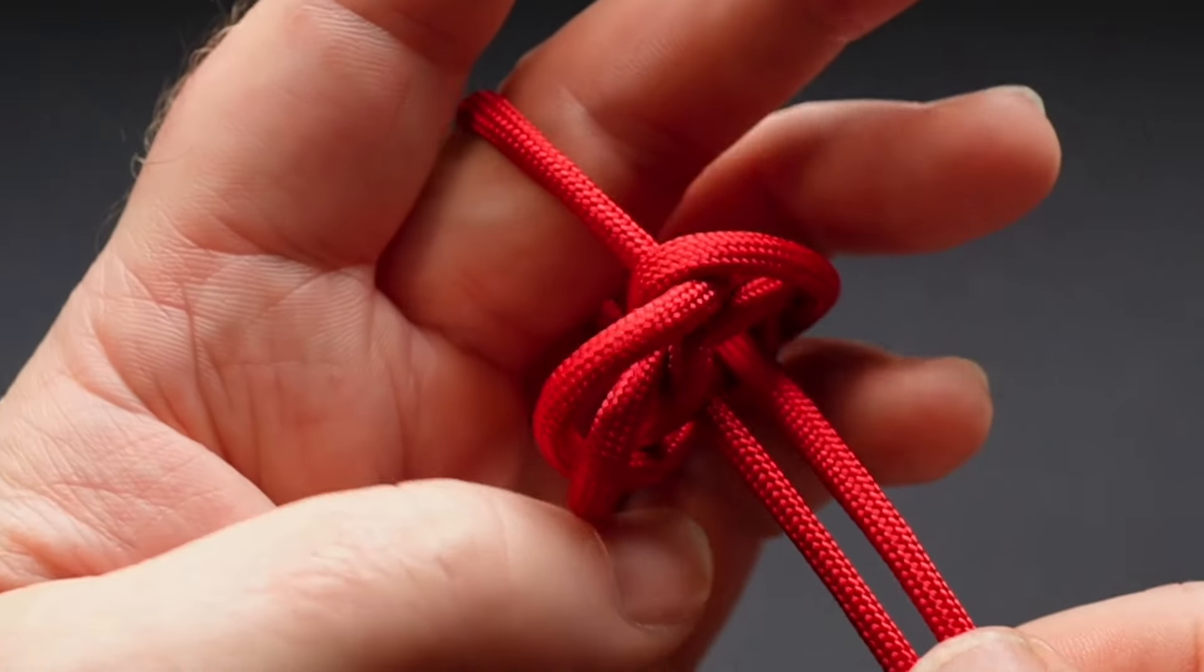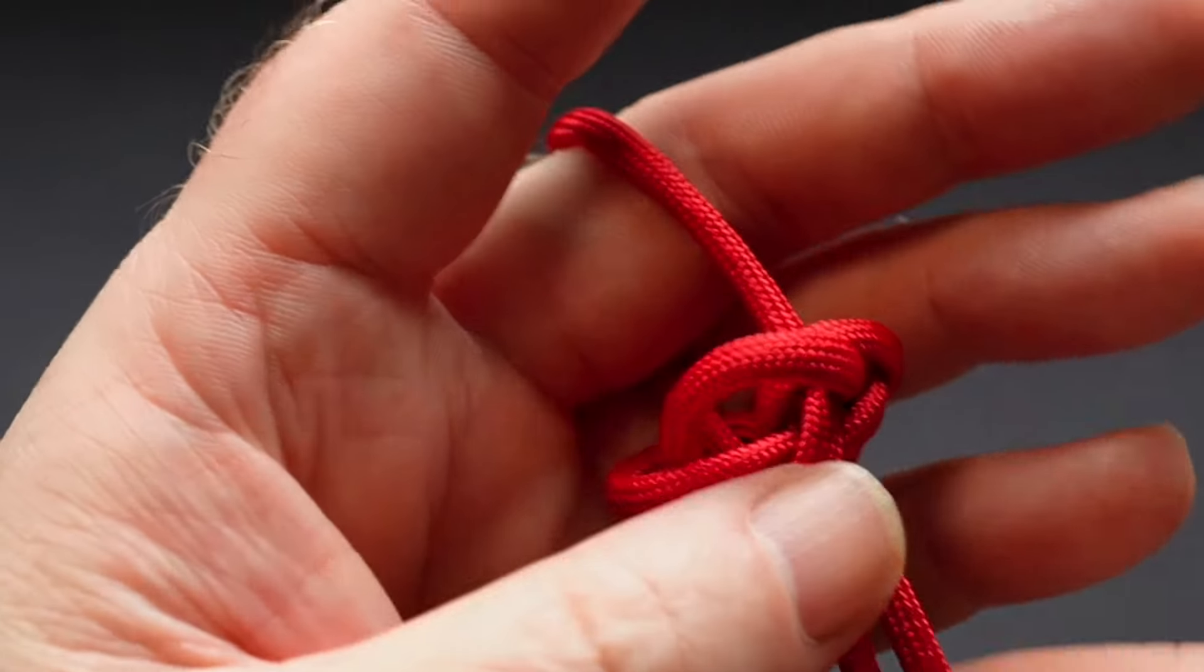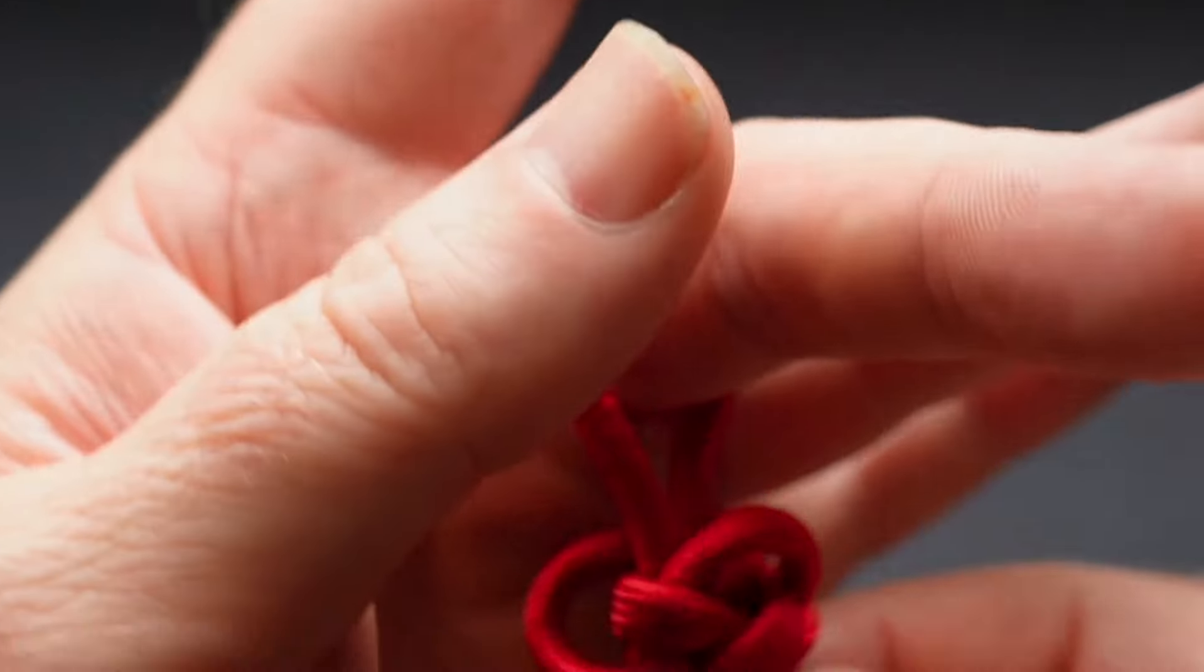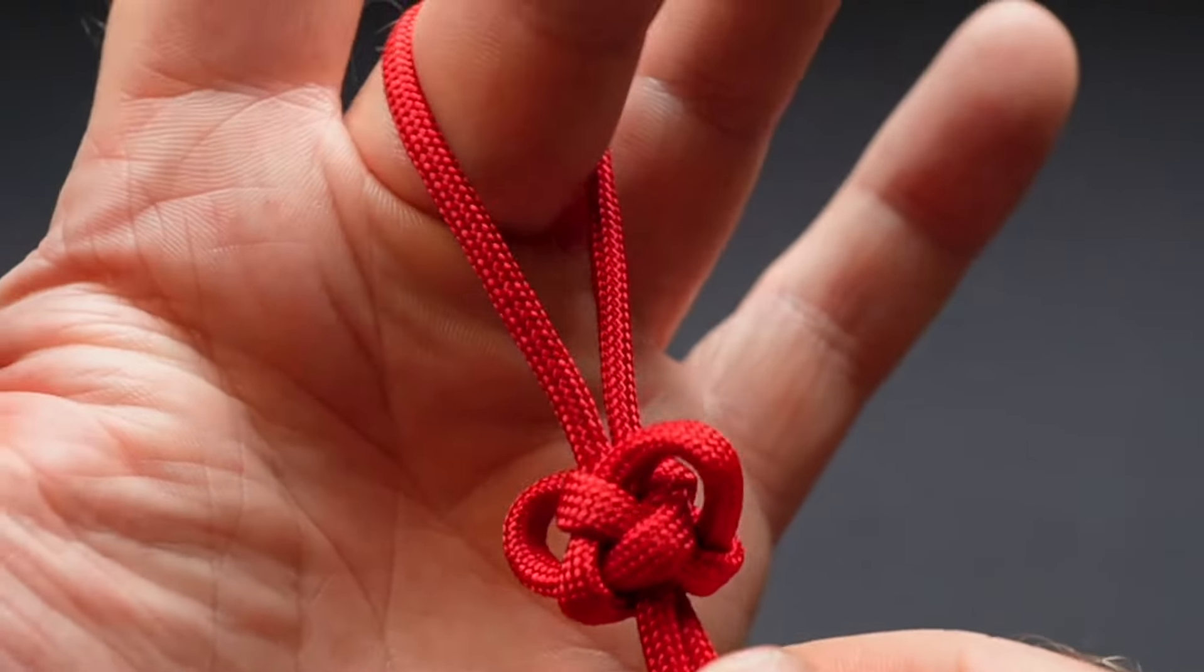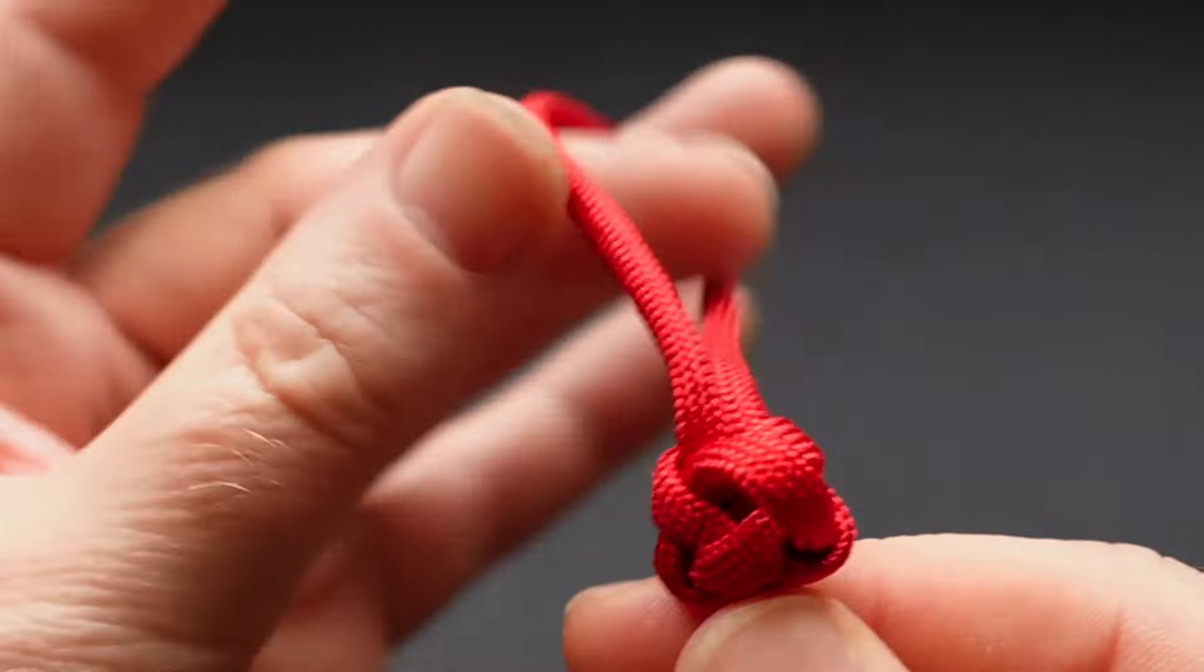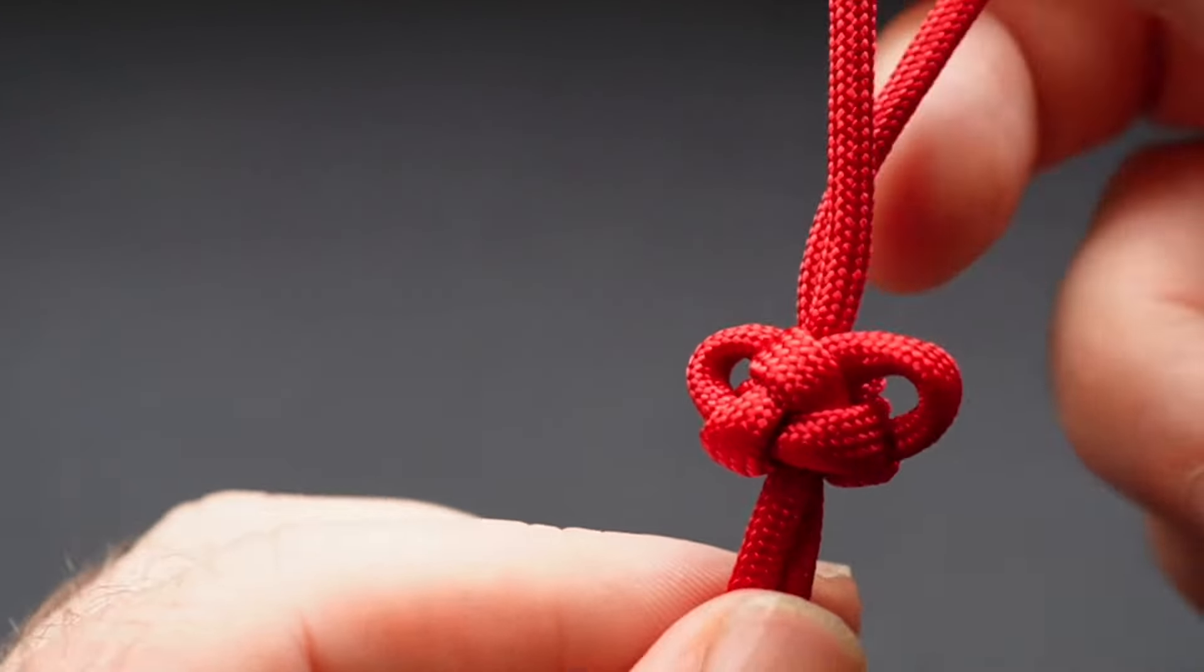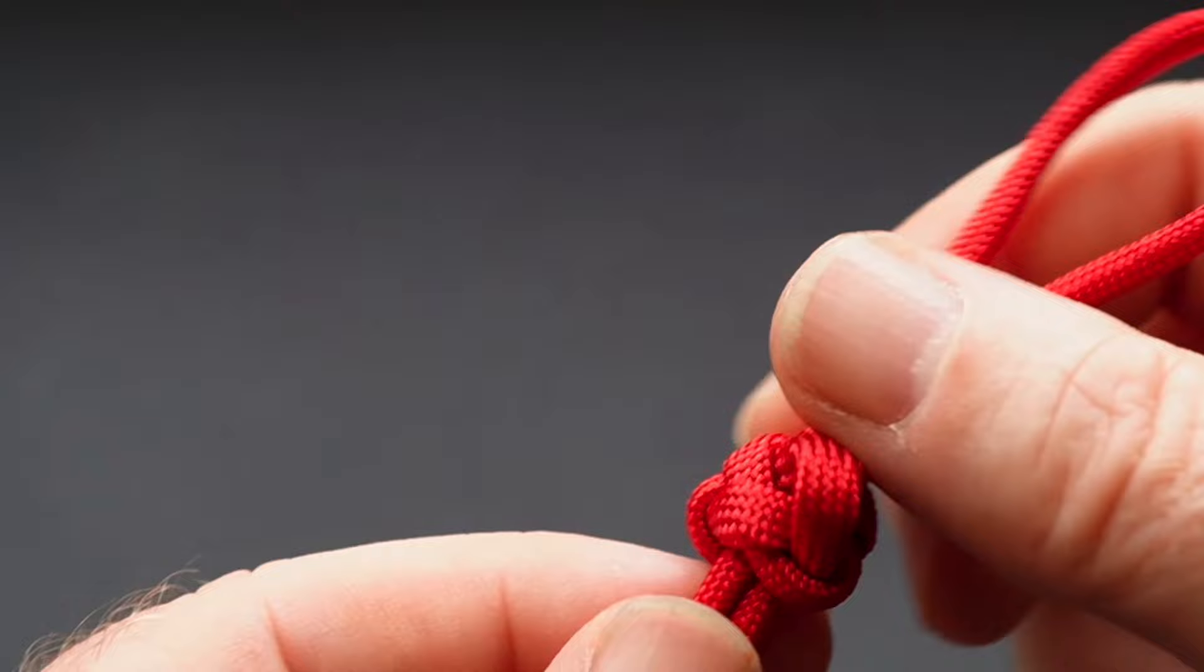Okay, you've got your ends, you've got the top loop, and all you do slowly and carefully is just kind of pull it together a little bit. That's the main shape of the diamond knot.